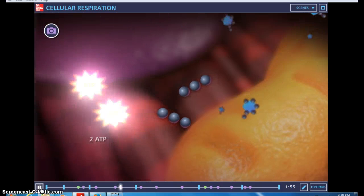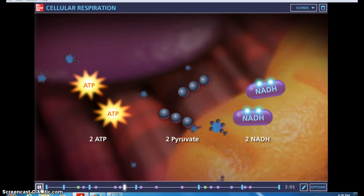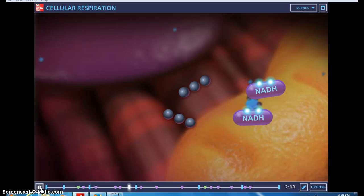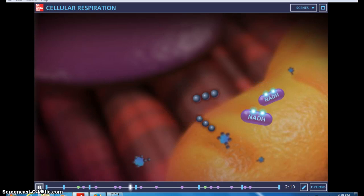In the process, a net of two molecules of ATP, two molecules of pyruvate, and two high energy electron-carrying molecules of NADH are produced. When oxygen is present, the pyruvate molecules and NADH enter the mitochondria, and the next stage of cellular respiration begins.